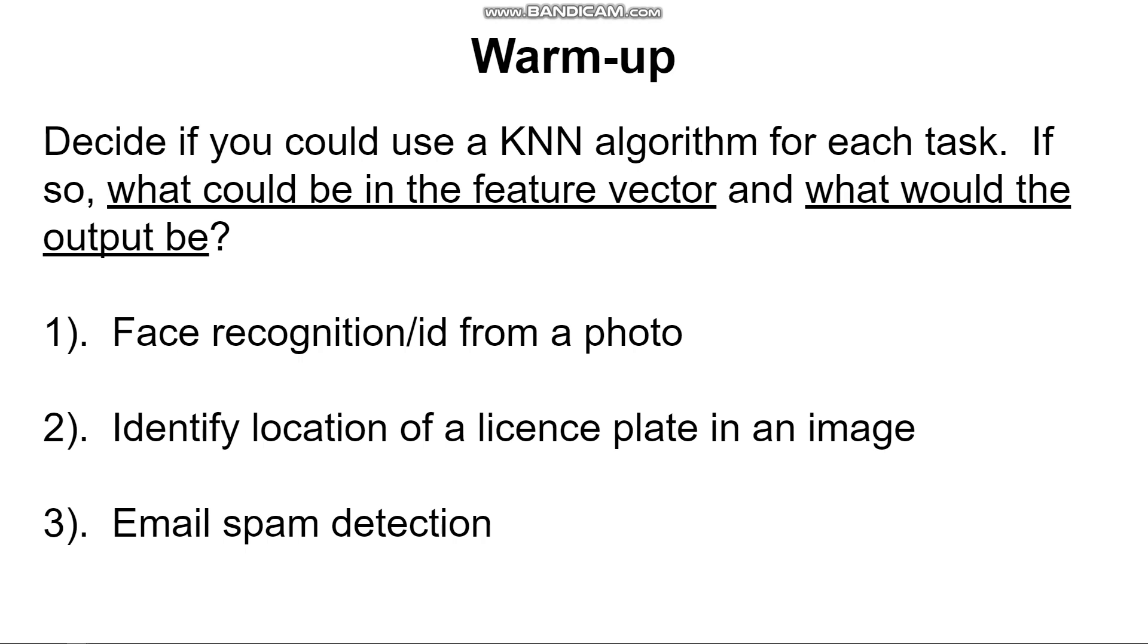You could look at statistics that might be related to the style of the email. So you could look at what proportion of words are all capitals or you could look at what's the average word length or what's the average sentence length. And each of those numbers could be one of the features in the feature vector. So email spam detection is definitely one where you could apply k-nearest neighbor.